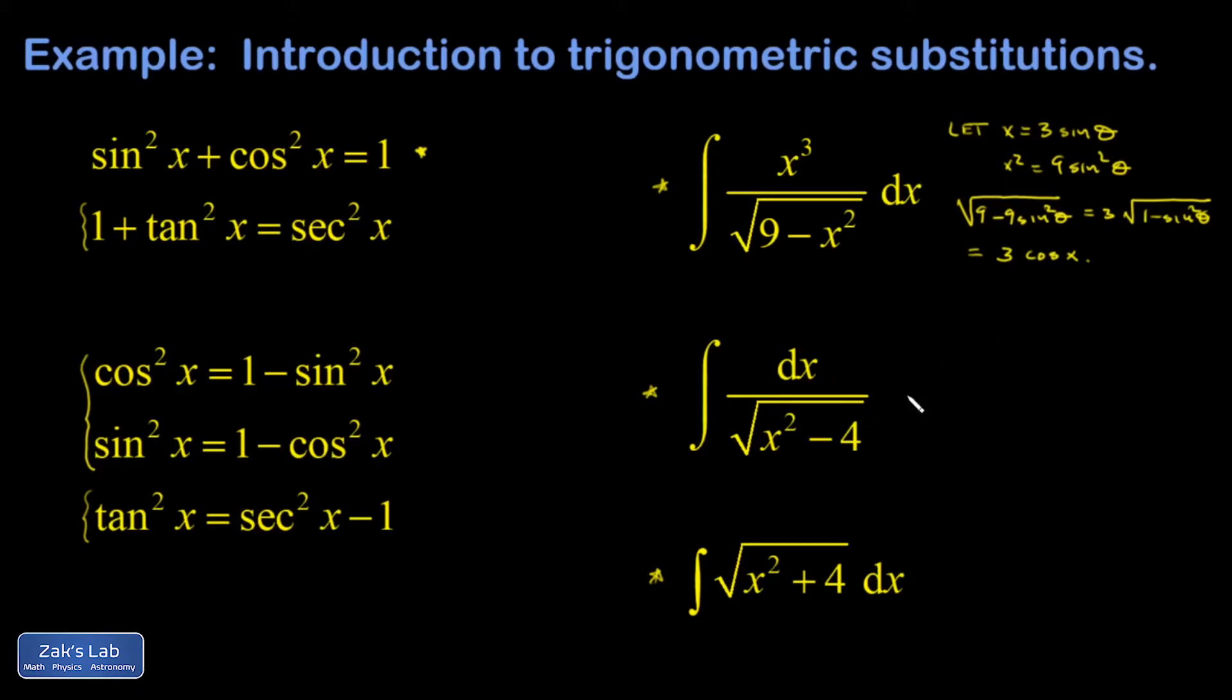All right, let's look at number 2. What kind of substitution do we want to make? I have a variable thing squared minus a constant. That looks like this identity. Maybe I'll mark it if it's hard to see my cursor. So secant squared minus 1, that's what I'm going for.